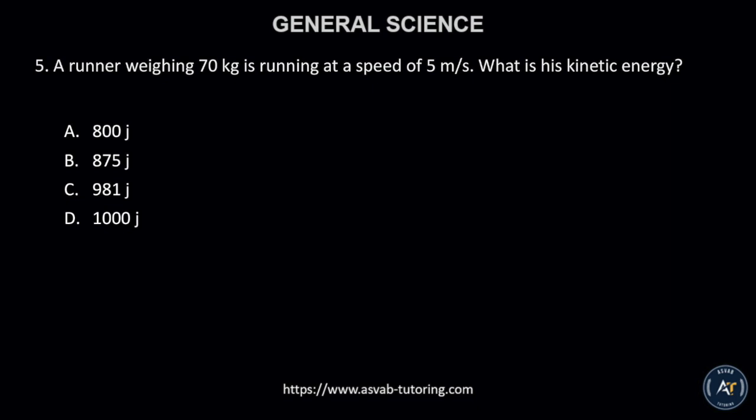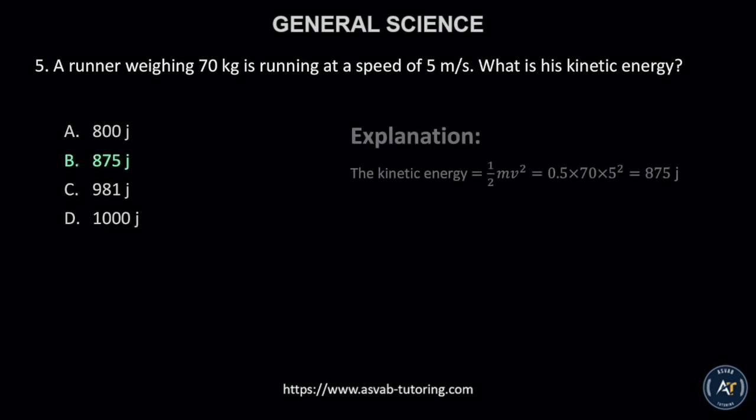Number 5. A runner weighing 70 kilograms is running at a speed of 5 meters per second. What is his kinetic energy? A. 800 joules, B. 875 joules, C. 981 joules, or D. 1,000 joules? The correct answer is letter B, 875 joules. The formula used is shown beside.